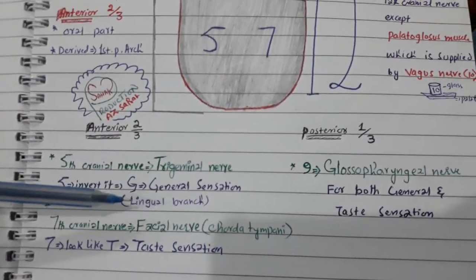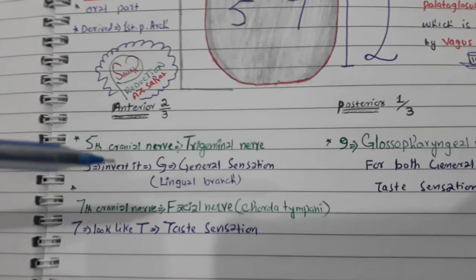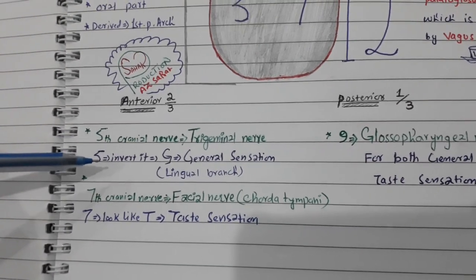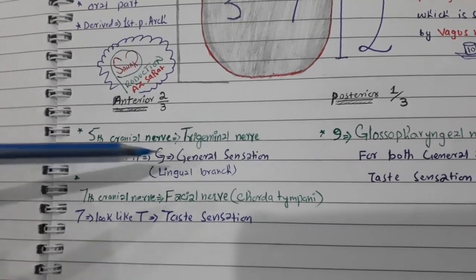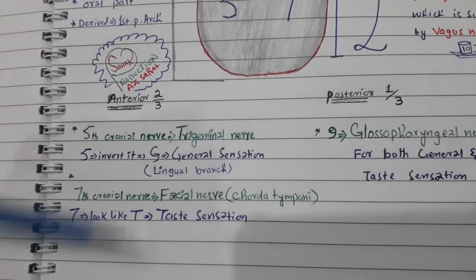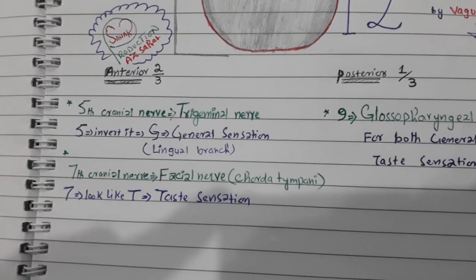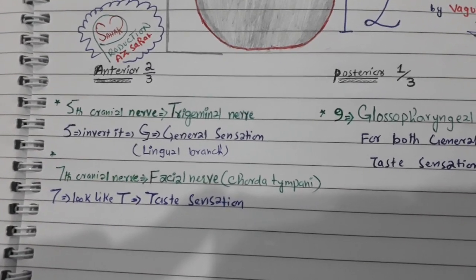The fifth cranial nerve is the trigeminal nerve, and the branch of the trigeminal nerve that supplies the anterior two-thirds of the tongue is called the lingual branch. If you write the number five invertedly, it looks like 'gen,' which means the fifth cranial nerve is for general sensation.